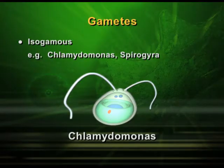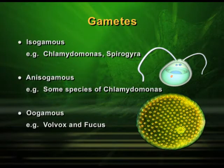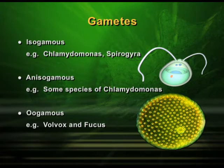So this is about the gametes. In this slide you can also see Chlamydomonas with two flagella, and you can see Volvox — of course it is a Volvox colony, because Volvox is found in a colonial form. One more point: isogamous kind of gametes are more common in Chlamydomonas and Spirogyra, whereas anisogamous is common in some species of Chlamydomonas, and oogamous is normally found in Volvox and Fucus. Of course, there will be more examples as well.